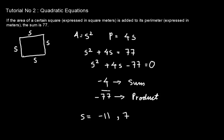But since it is the side of a square, it cannot be negative. So we cross out -11 and our answer is 7. The side of the square is 7 meters.